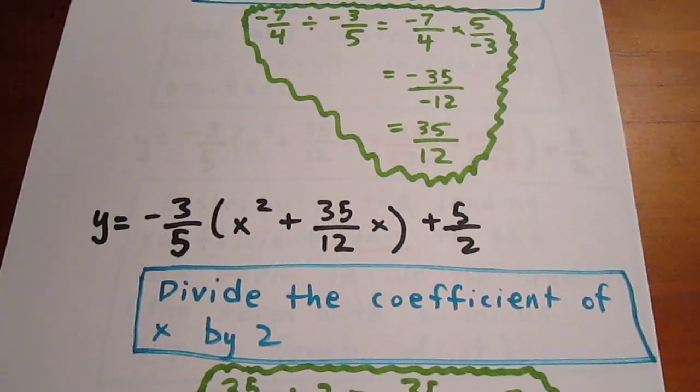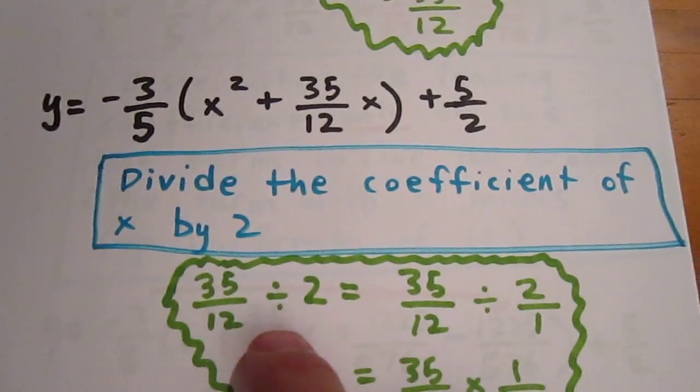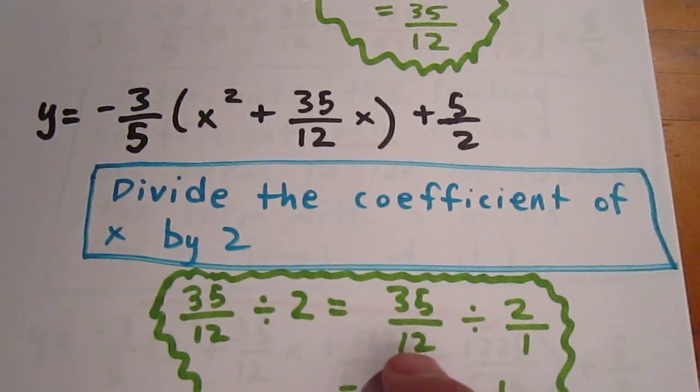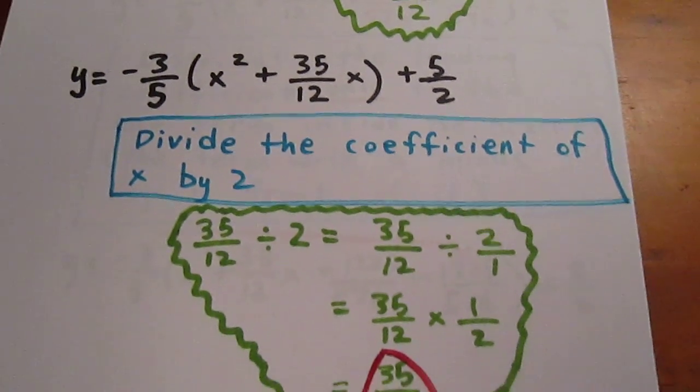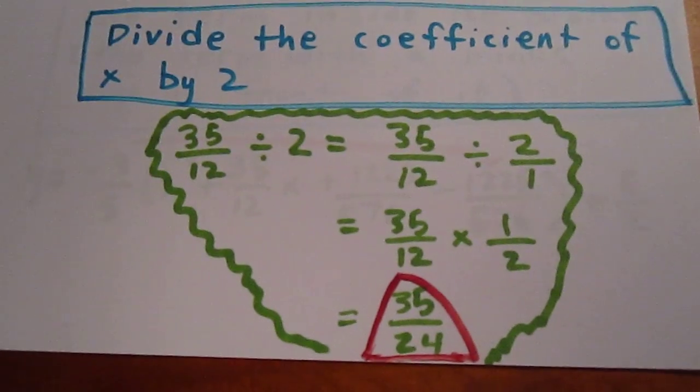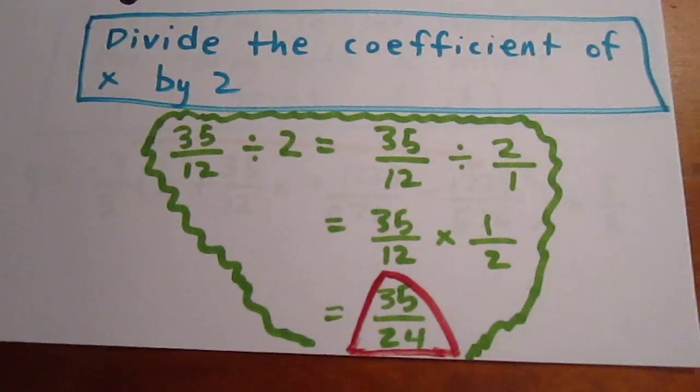What we now want to do is divide the coefficient of x by 2. Well, 35 over 12 divided by 2 is the same as 35 over 12 divided by 2 over 1, which is the same as 35 over 12 times 1 over 2, which is the same as 35 over 24. We put that in a red triangle because we just might come back to it.